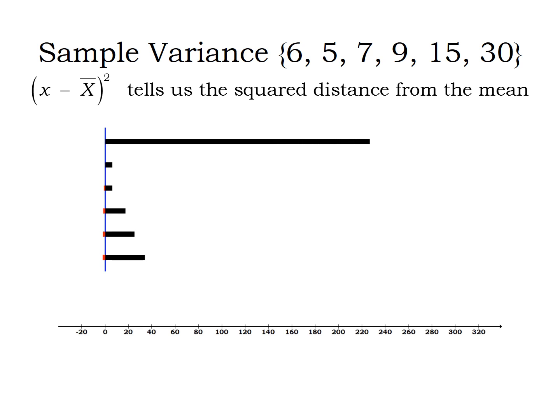Now notice here that when you start squaring those large numbers, they become very large. So all of our (x - x̄)² terms are positive. And that 30 that was way above average of 12, when we square that, we get that giant number over 320.